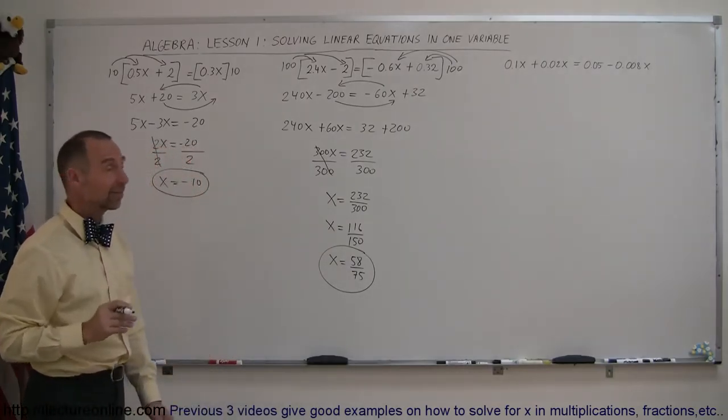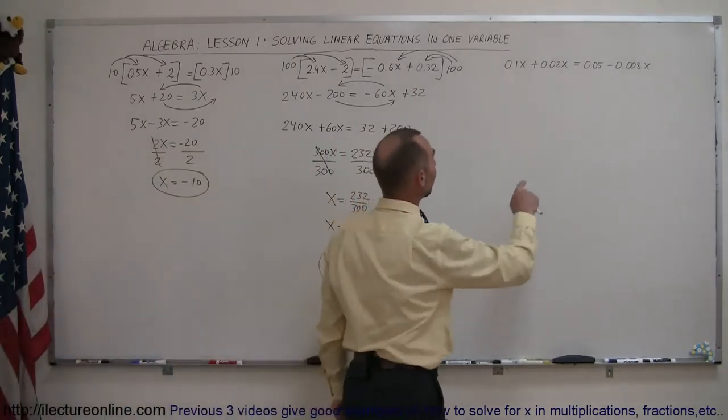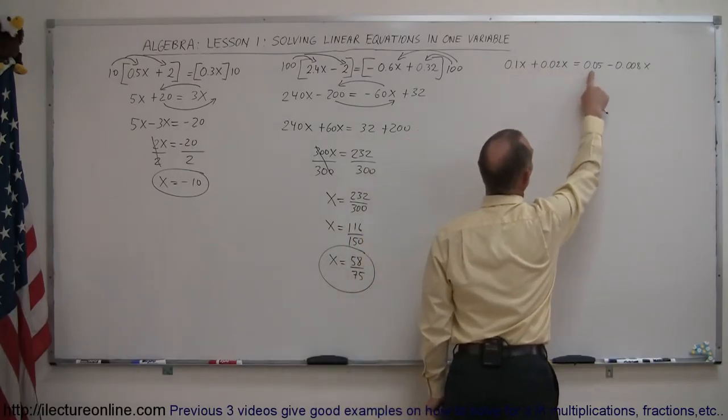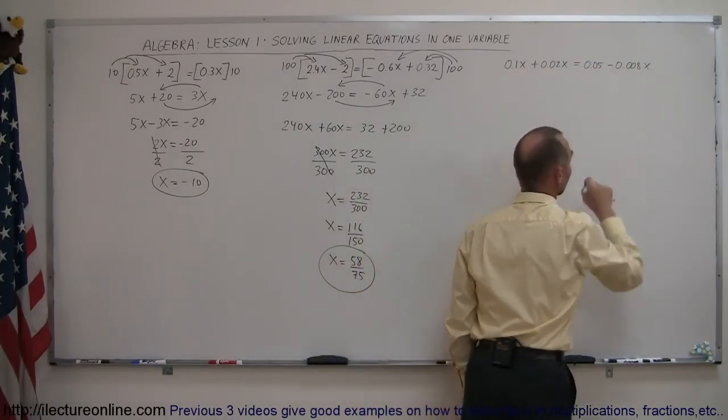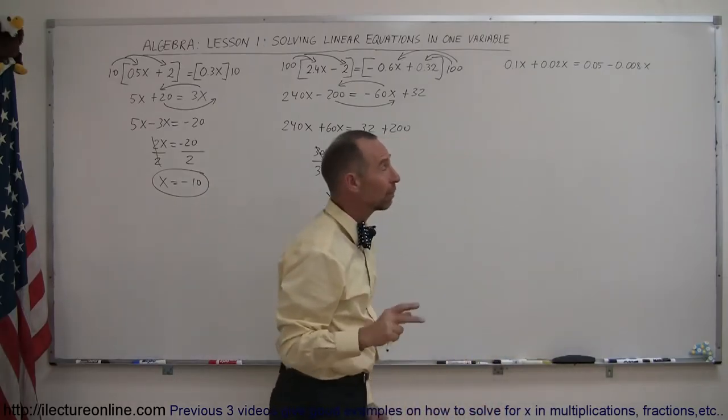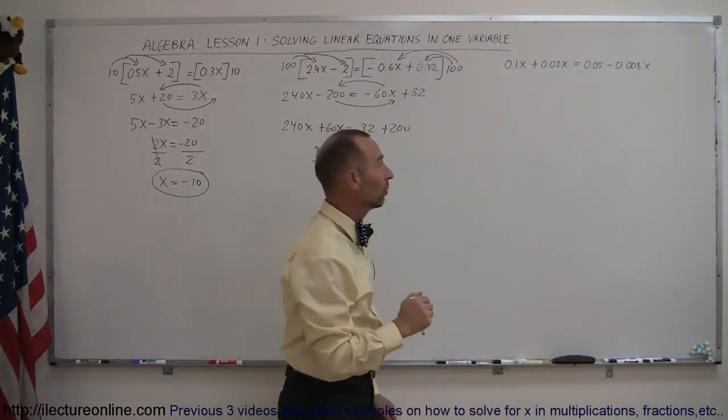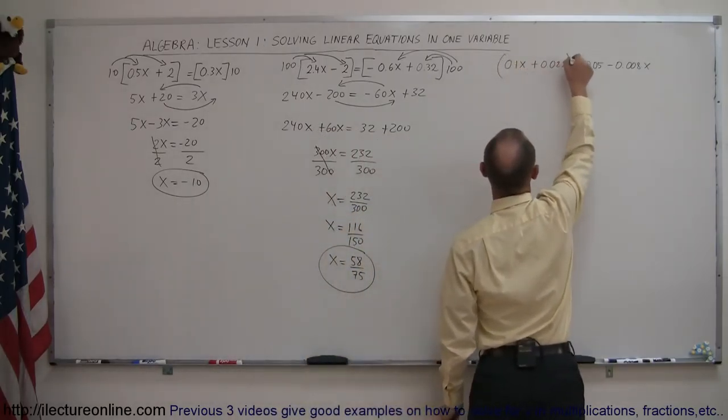so we can still divide by 2, so x is equal to 58 divided by 75. At this point, they're no longer divisible by 2, and wonder if they're divisible by 3. Well, 75 is, but 58 is not. So now we're getting to the point where we probably cannot simplify this any further, so we'll just leave it at that.